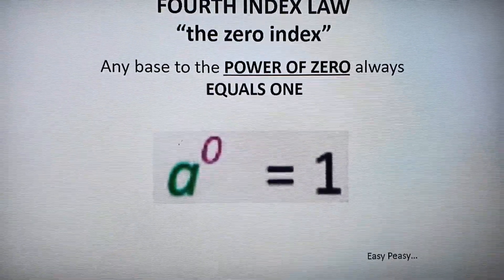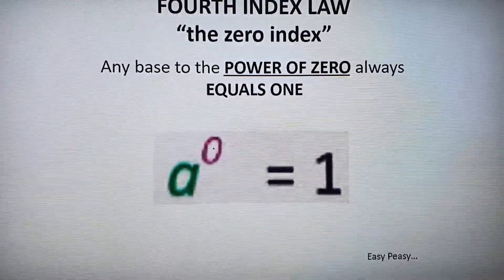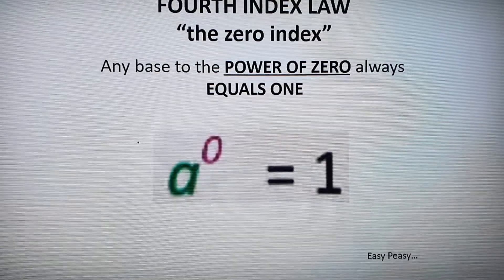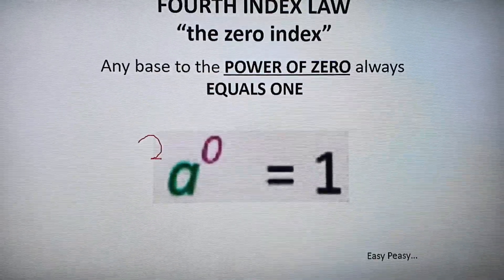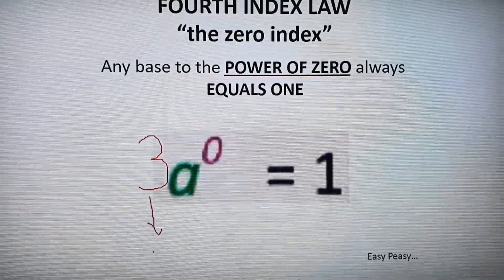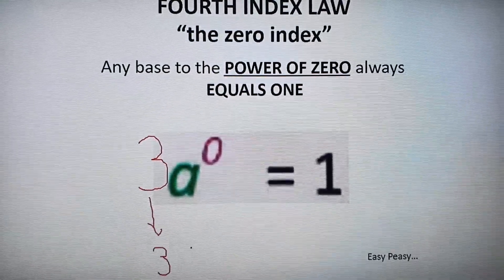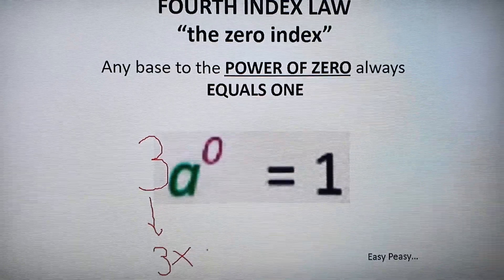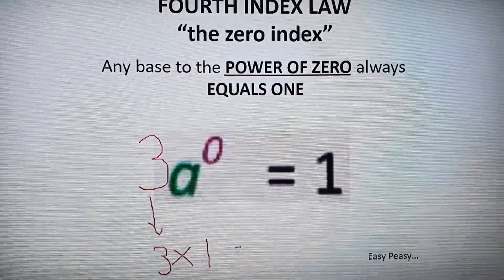Now it only equals to one to the thing that's actually raised to a zero. So if I actually wrote 3a to the power of zero, this is actually not going to equal to one. It's going to equal three because that's still going to be a three. And it's multiplying a to the power of zero and a to the power of zero means one. So we're still going to get a three.